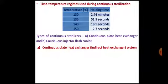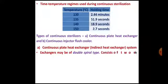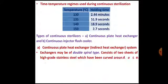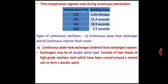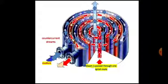These heat exchangers are of different types; in most cases they are double spiral type, meaning it is a spiral coil which is doubled. From one chamber unsterile medium is allowed to pass in, and from another chamber there is the passage of steam. It consists of two sheets of high-grade stainless steel curved around a central axis to form a double spiral.